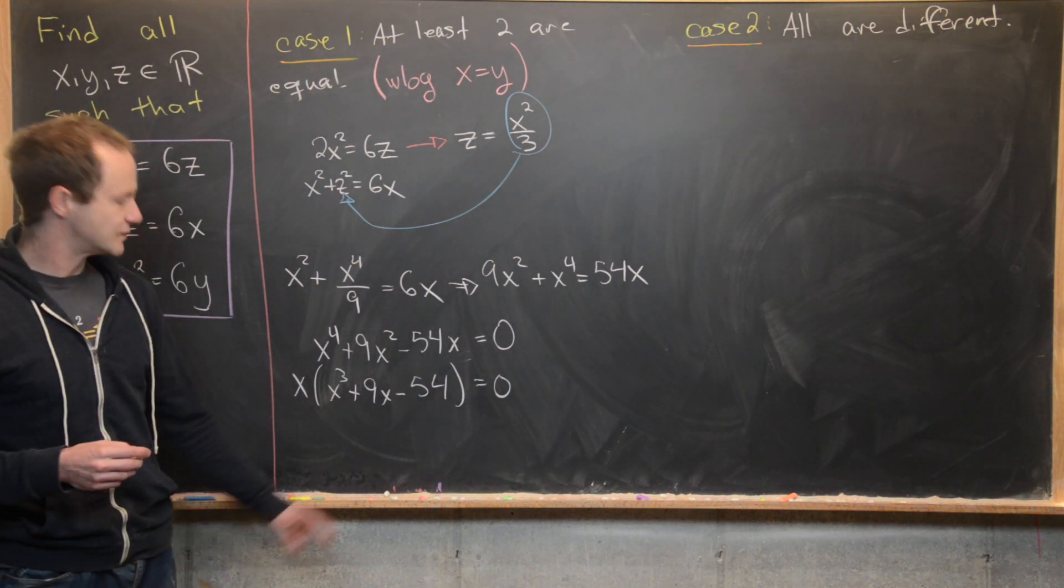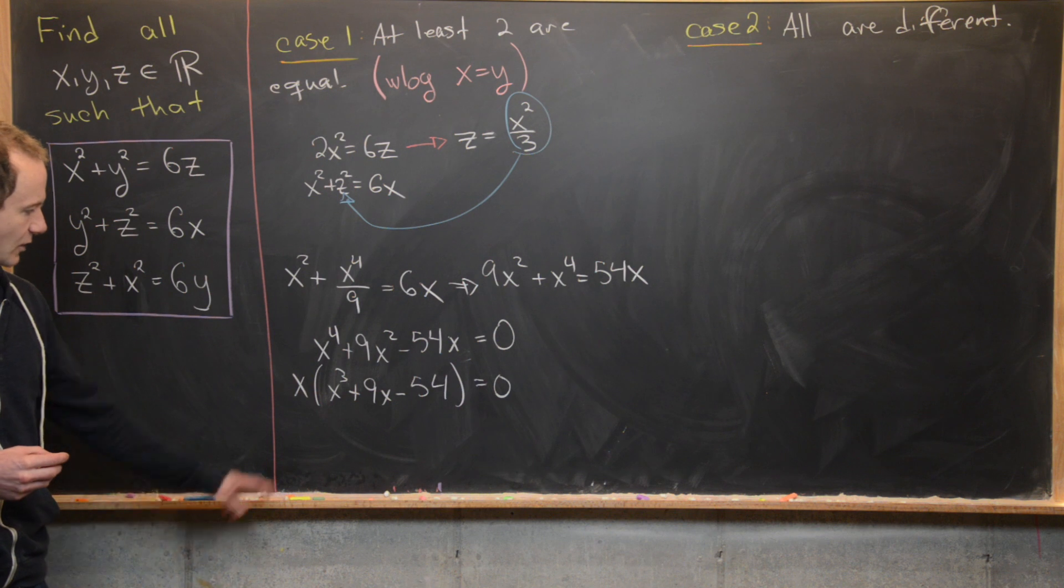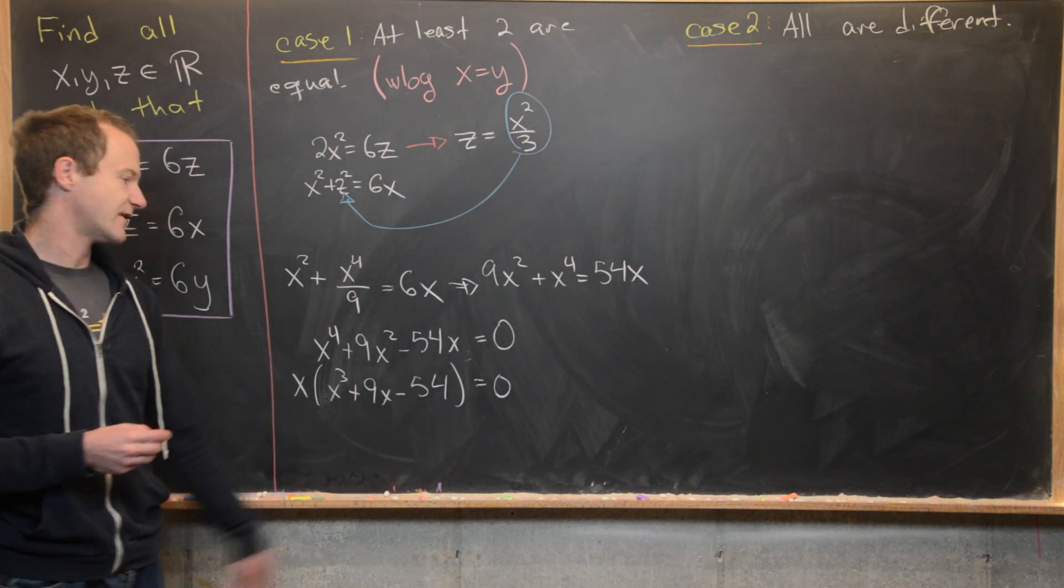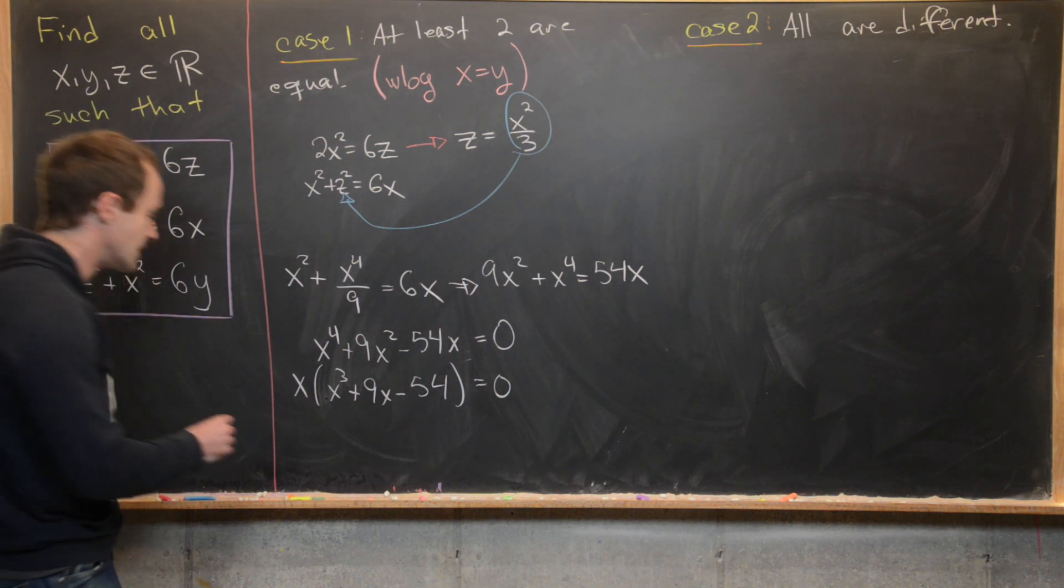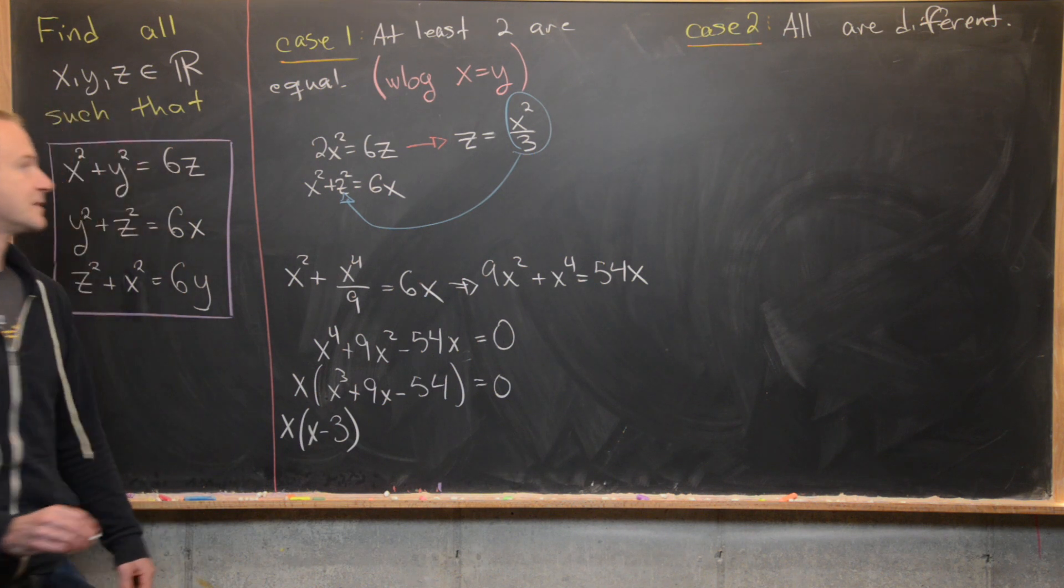The possible roots will be factors of 54, and what you can find is that 3 is a factor. So you can check that real quick: 3³ is 27, 9 times 3 is 27, 27 + 27 - 54 is 0. So that means we can factor out an (x - 3) like that.